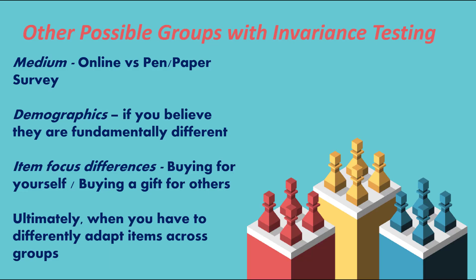Another reason you'll see invariance testing required — especially by reviewers — is because of the medium used to collect data. For instance, if some data was collected via online surveys and some via pen and paper, reviewers may say there could be differences in responses due to the medium itself, and ask you to do invariance tests to show that the responses are the same.